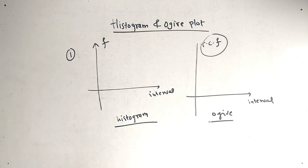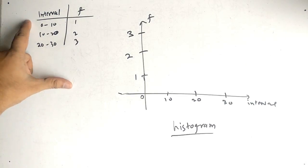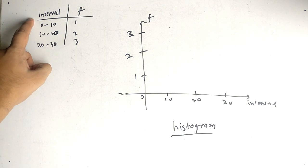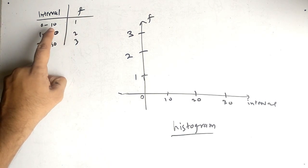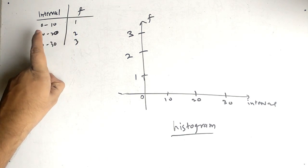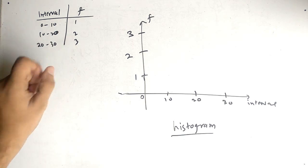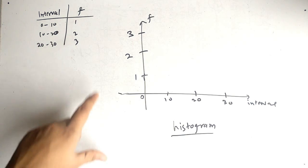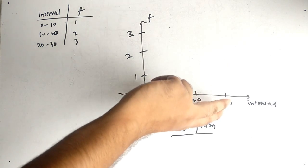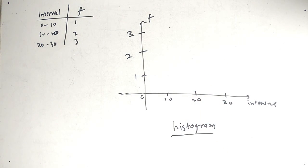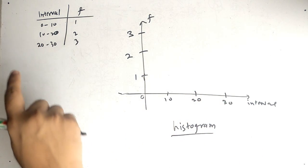A Histogram is very simple because frequency is already given in the question and interval is also given. But for the Ogive graph, we have to find the relative cumulative frequency. Let's see by an example. We have an interval column and a frequency column. Between 0 to 10 we have frequency 1, between 10 to 20 we have frequency 2, and so on.